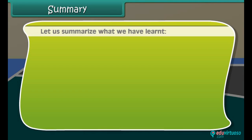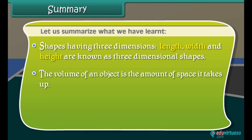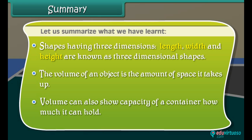Summary. Let us summarize what we have learned. Shapes having three dimensions—length, width, and height—are known as three-dimensional shapes. The volume of an object is the amount of space it takes up. Volume can also show capacity of a container, how much it can hold.